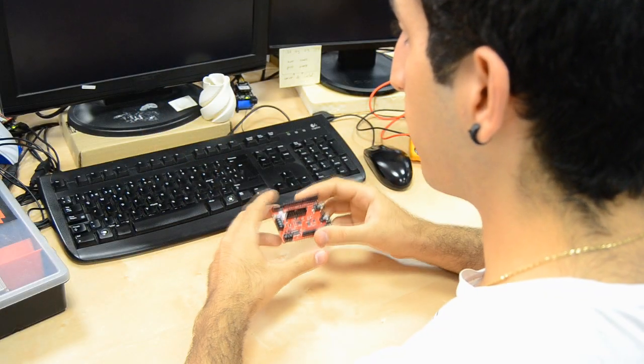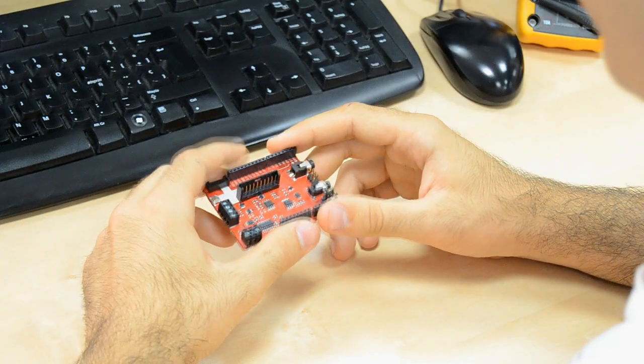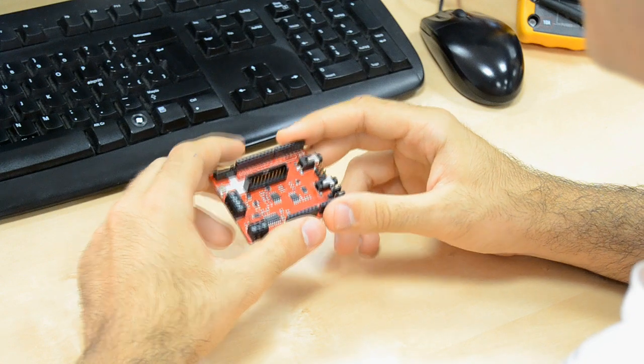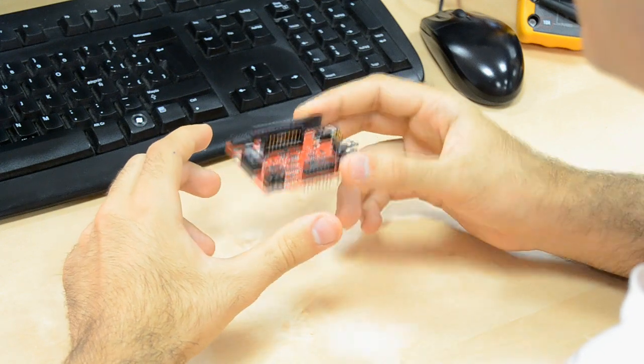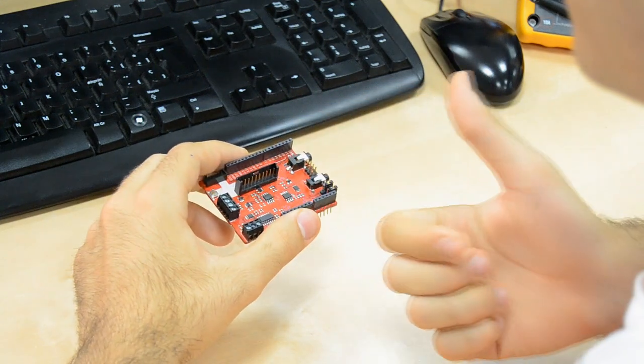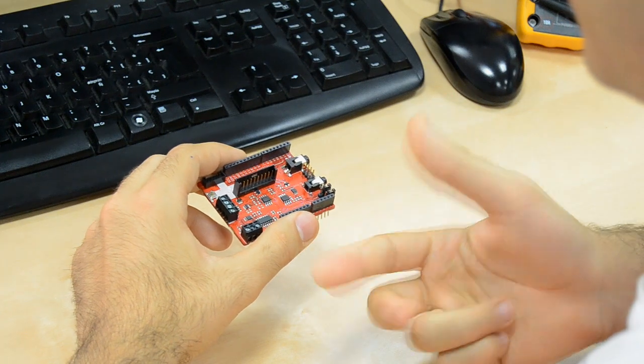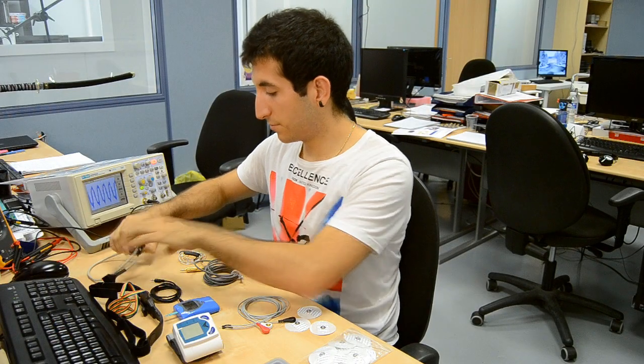The eHealth Sensor Platform has been designed to help research developers and artists measure biometric sensor data for experimentation, fun, or test purposes. This platform allows Arduino and Raspberry Pi users to perform biometric and medical applications using different sensors.